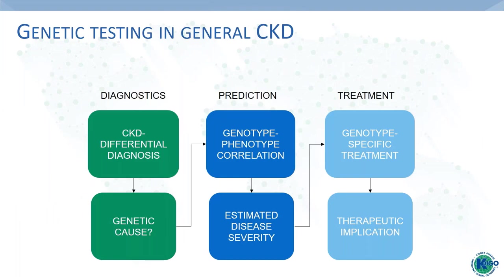Speaking about genetic testing in clinical practice, we can distinguish three categories. First, the diagnostic aspect: testing can be used for CKD differential diagnosis to detect an underlying genetic cause. Second, prediction: once genotype-phenotype correlations are established, we can estimate course of disease or severity. Third, ideally, genotype-specific treatment—this isn't available in many CKD conditions yet, but the goal is therapeutic implications depending on the individual genotype.